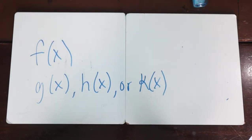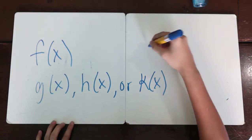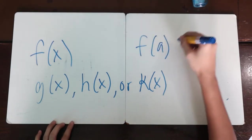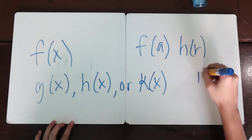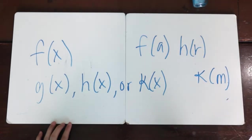In addition, functions may use other input values than x, like f(a), h(r), or k(m). The key idea is to always remember that the variable outside the parentheses is the name of the function, while the variable inside the parentheses is the input value of the function.